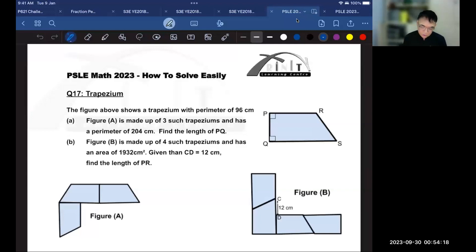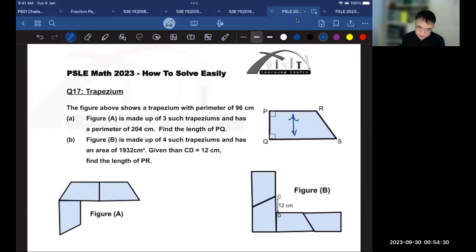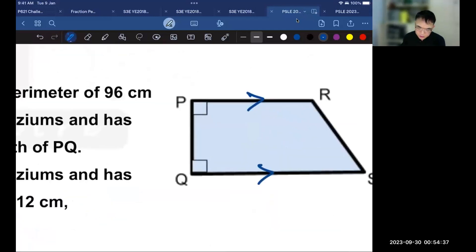This is question number 17, based on trapeziums. The thing to remember about trapeziums is that the opposite sides of the trapezium, these two sides, are parallel to each other. It's also given in the question that these two lines here are perpendicular, as shown by the right angle, and also these two lines are perpendicular. While keeping this in mind, let us read the question.